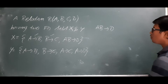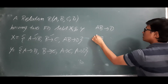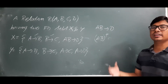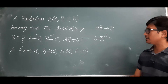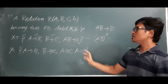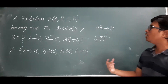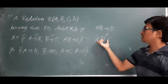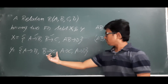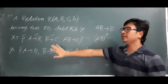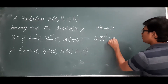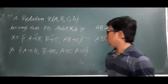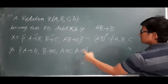AB determines D is not directly present, so I need to check whether it is indirectly present in Y. I will calculate the AB closure from the FDs given in Y. If it contains D, then I can say AB determines D is present. The AB closure will have A and B. A also determines B, B determines C, and A determines D.